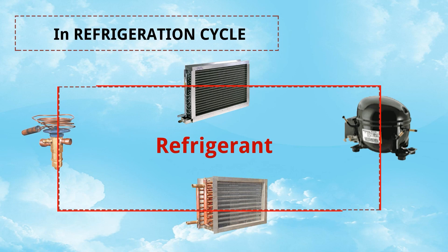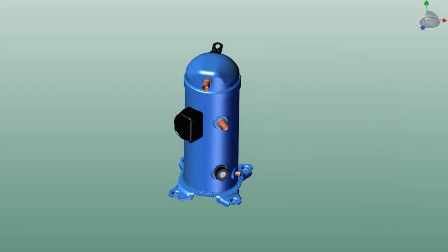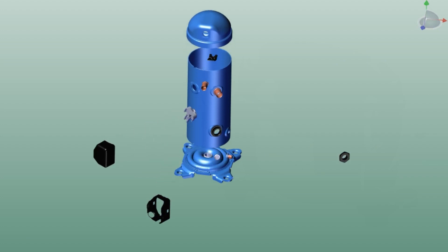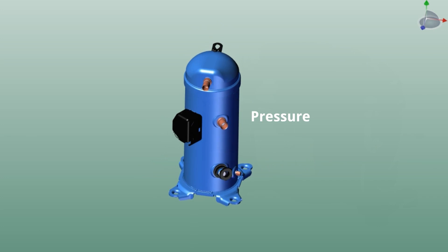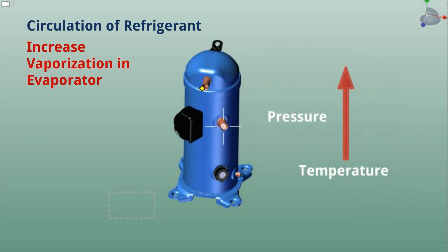Now we will learn about the compressor. This is an example of a typical compressor in a refrigeration cycle. Normally a reciprocating, scroll, or screw compressor is used. It compresses the refrigerant vapor and increases the pressure and temperature. Since the vapor is compressed here, this cycle is called the vapor compression cycle. The main functions of the compressor are: circulation of refrigerant, increasing vaporization in the evaporator, and helping with heat rejection.